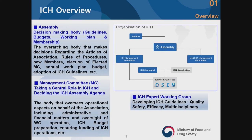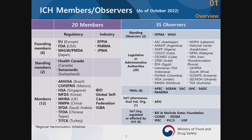If you look at the organizational chart of the ICH, the assembly is the main body, and we also have the Management Committee, MC, and other working groups. The ICH has 20 members and 35 observers. Europe, Japan, and the U.S. started as the regulatory members, and EPA, Pharma, and JPMA were the founding members from the industry side.